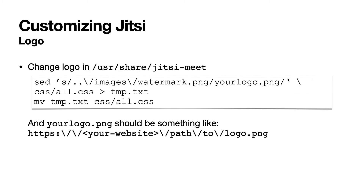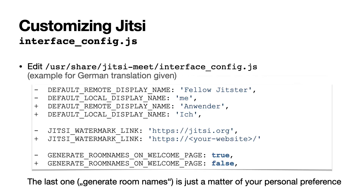The default Jitsi website already looks pretty neat, but you can easily customize the look of it. If you are hosting such a website in Germany, for example, you definitely want to include links to the imprint and to a page with data privacy information. You can also change the logo.